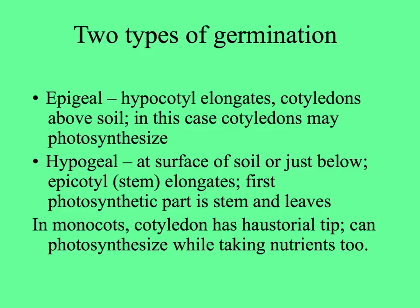In epigeal germination, usually the cotyledons are green and photosynthetic. Hypogeal germination keeps the cotyledons in the soil, so that the first photosynthetic part is the epicotyl above the cotyledons — the stem and the leaves. In monocots, like grasses or corn, the cotyledon is single and has a haustorial tip, meaning absorptive. It elongates from the base but keeps the tip in the seed so it can still take nutrients.